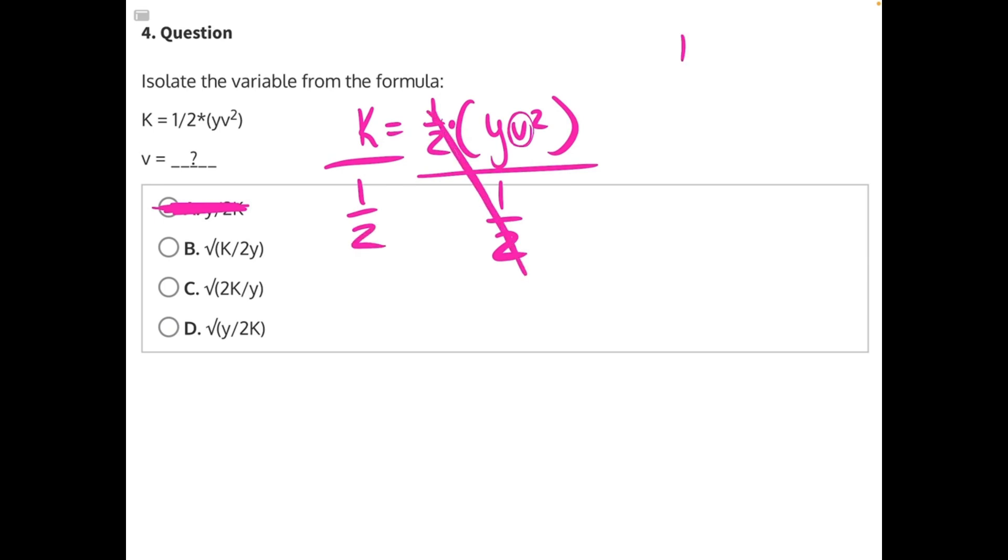Whenever you're dividing with fractions, remember k divided by one-half is the same thing as multiplying by the reciprocal, and there's a little acronym you can remember to help, which is keep, change, flip. Keep the first number, change the symbol from division to multiplication, and then flip your fraction. So what we're really dealing with here is k times 2, which will give us 2k equals y v squared.